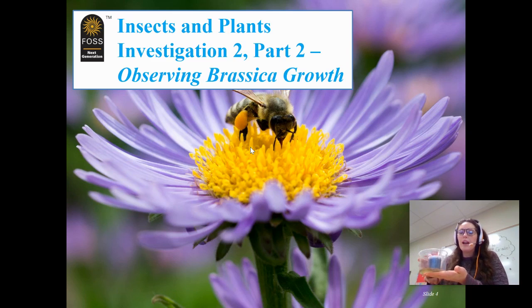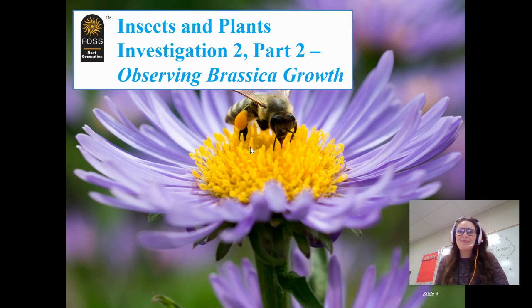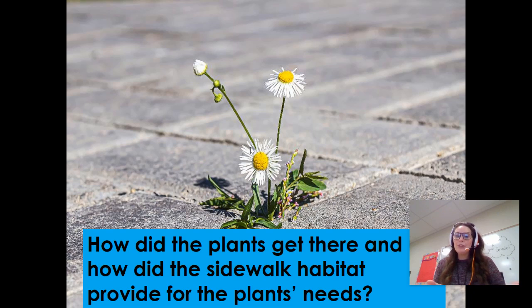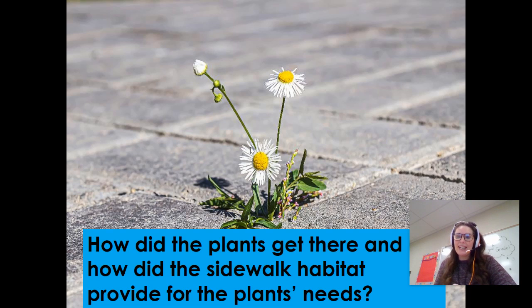You will also want to have your brassica plant with you to do some observations. Take a look at this photo — what do you see in this picture? How did the plants get there, and how did the sidewalk habitat provide for this plant's needs? How was this plant able to grow in this environment? We're going to revisit this question in our next science lesson, but I want you to be thinking about how this plant is able to grow and survive in this environment, and what it needed in order to grow.